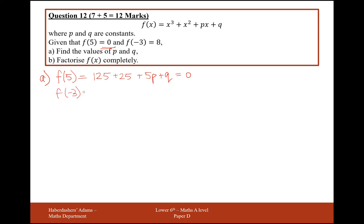And f of minus 3, that's going to equal minus 27, plus 9 from the minus 3 squared, minus 3p, add on the q, and that will equal 8 from the end of that expression there.